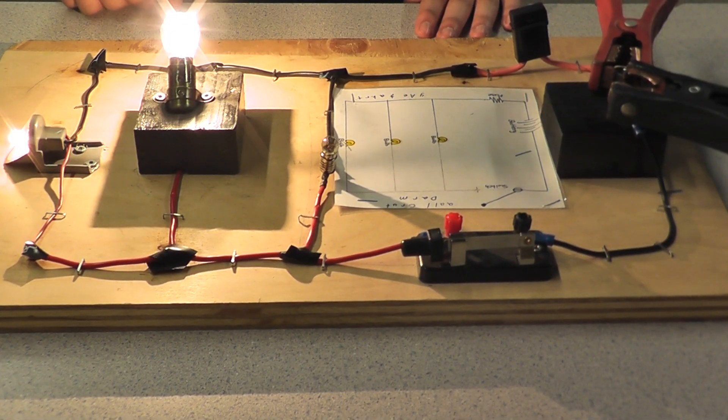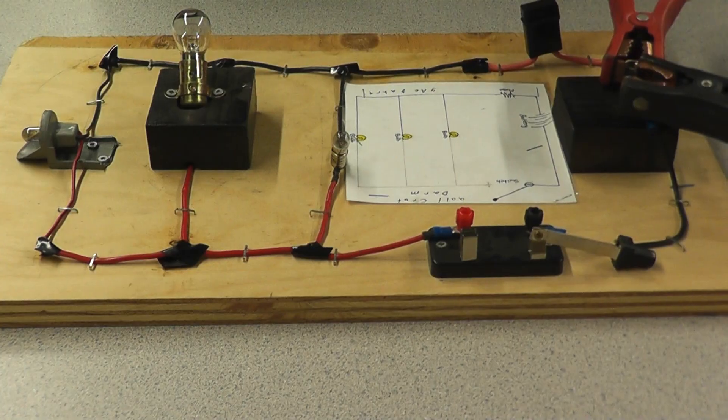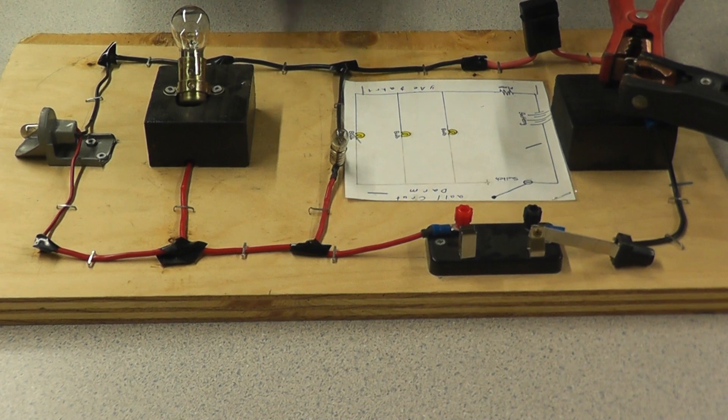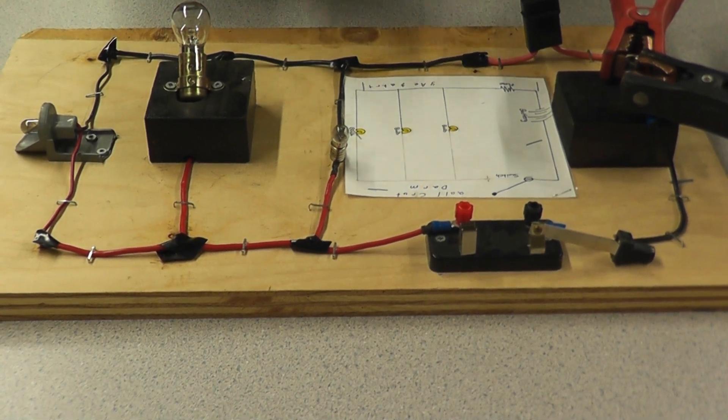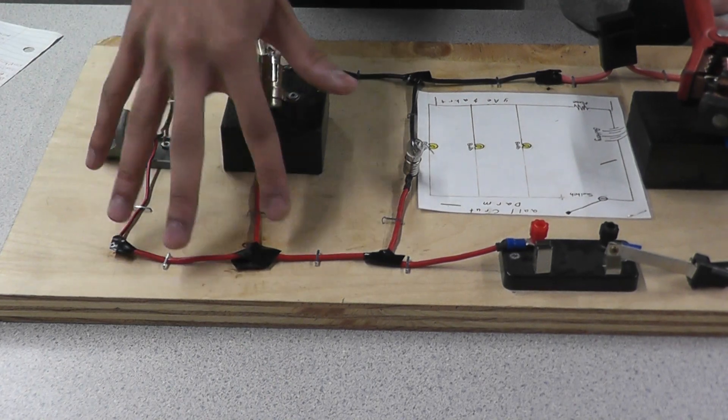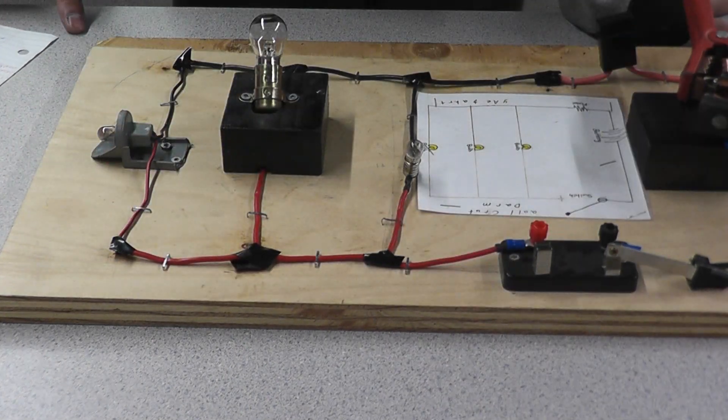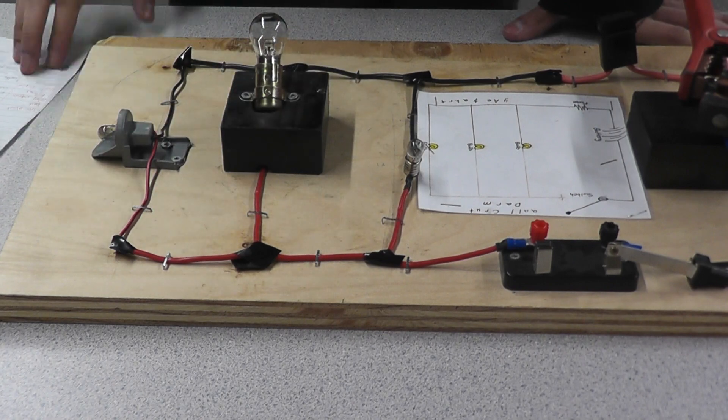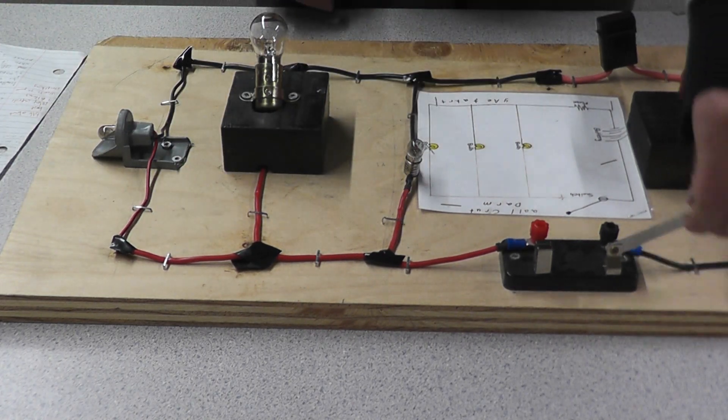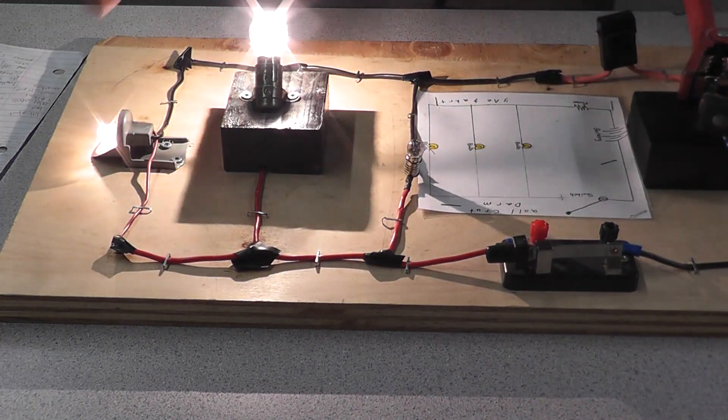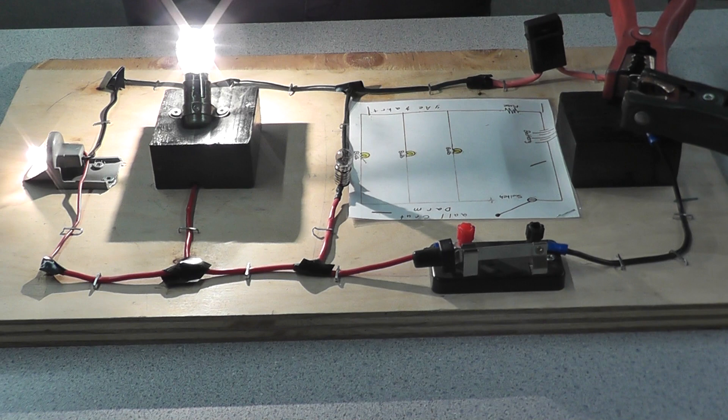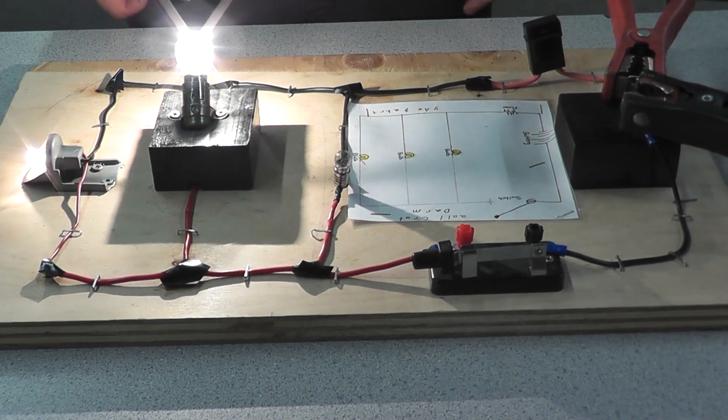This here is the parallel circuit. The parallel circuit is very similar to the series circuit, except there is more than one pathway to complete it. If these two pathways were in here, then it would just be a normal series circuit. But since there are multiple pathways, even if a component in one of the pathways is broken, the other two will still work. And that is the main difference between the series and parallel circuit.